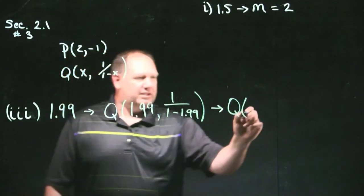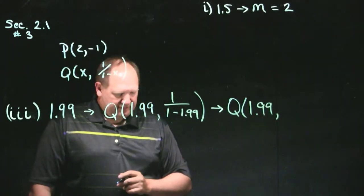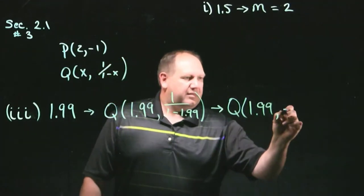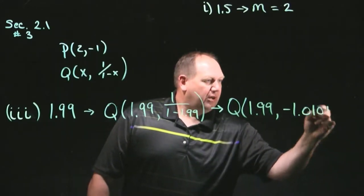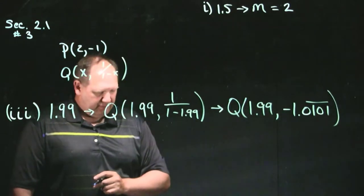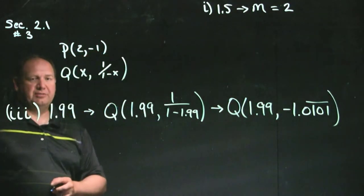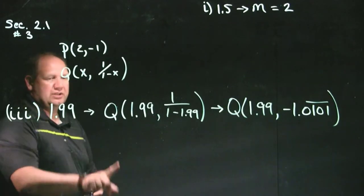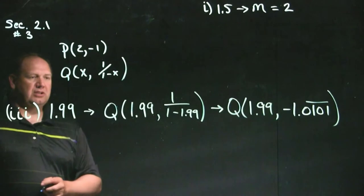And that simplifies to q, and then 1.99. And when I type that into my calculator, I got minus 1.0101, and that 0101 will just keep repeating. So to find the slope of the secant line between p and q, when the value for q is determined by 1.99,